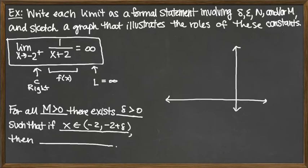With that set up, our function 1 over x plus 2 is going to be in the interval that we can think of as the interval at infinity — that is, from M to infinity.